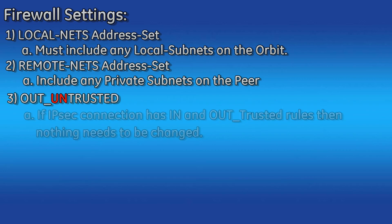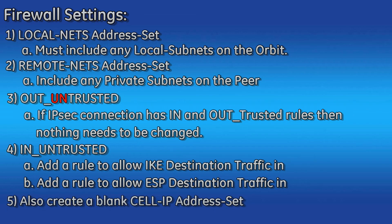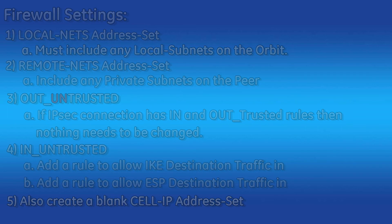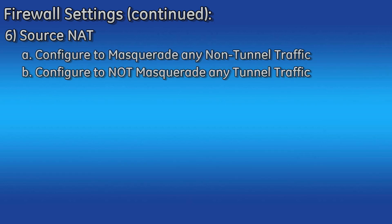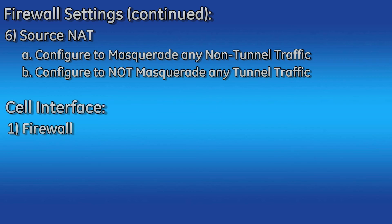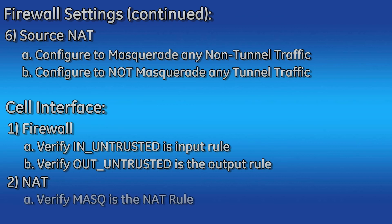It is recommended that you simply modify these two rules and do not create new ones. If you had set the input and output filters in the IPSec connection to in-trusted and out-trusted, you will not need to change the out-trusted rule. You will, however, need to modify the in-untrusted rule to allow IKE destination traffic and ESP traffic into the Orbit. Lastly, modify the source NAT rule to masquerade any non-tunnel traffic and to not masquerade any tunnel traffic. Verify that your cell interface is using the correct input and output firewall rules and the MASQ NAT rule.